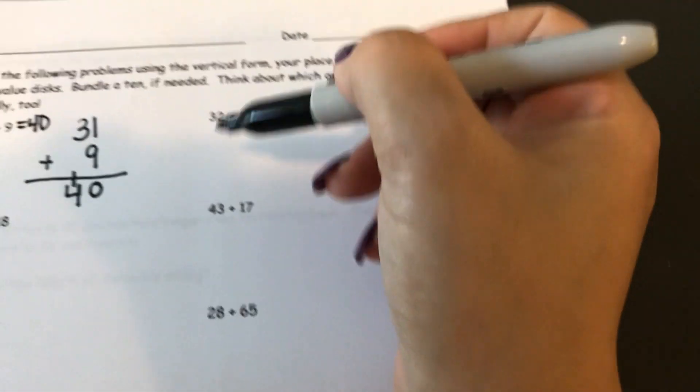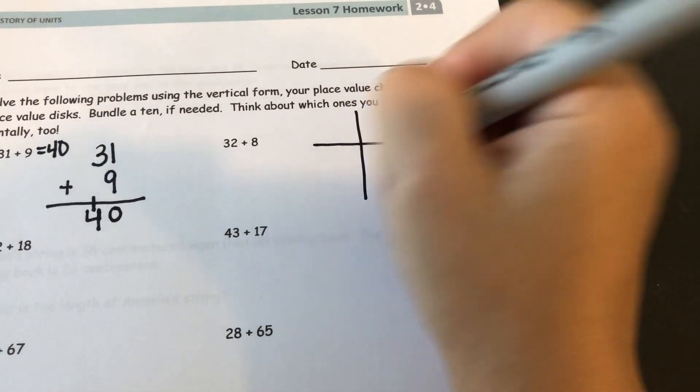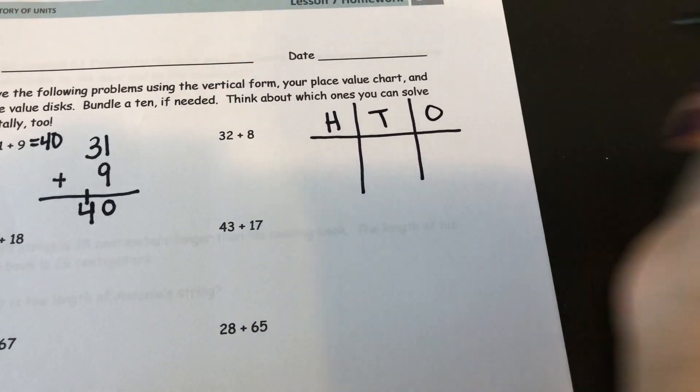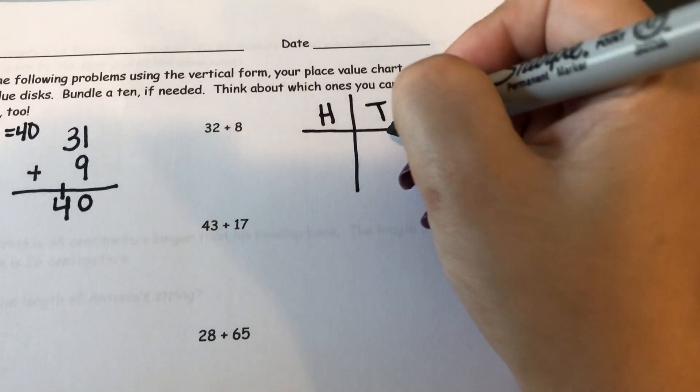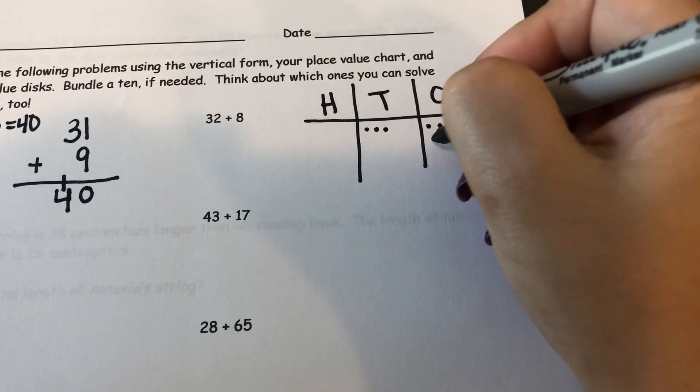Now I'll show 32 plus 8 using a place value chart. Hundreds, tens, ones. 32 looks like 3 tens, 2 ones, and 8 just looks like 8 ones.